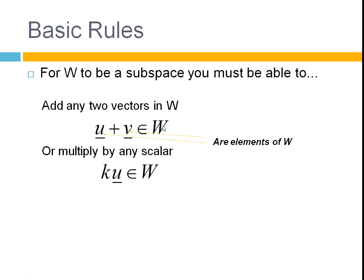So, U plus V is part of the set of W. So, you can just read that as being still in W. And you must still be in the subspace after you do any of these two things. Add any two vectors, multiply by any scalar, and still be in the subspace.